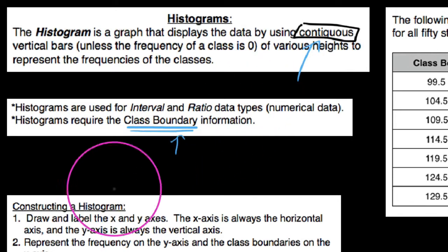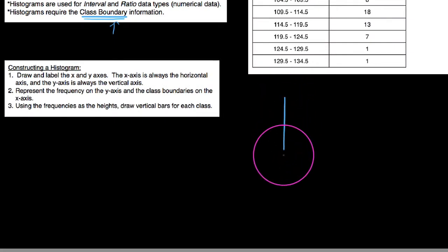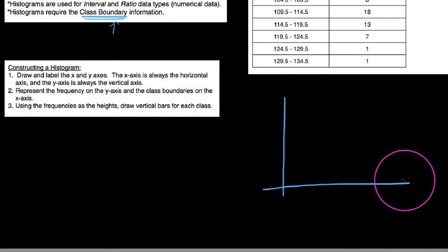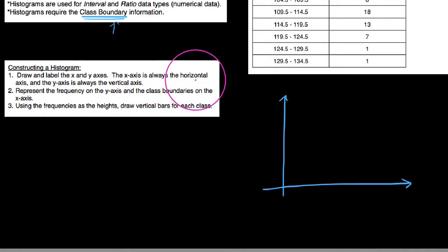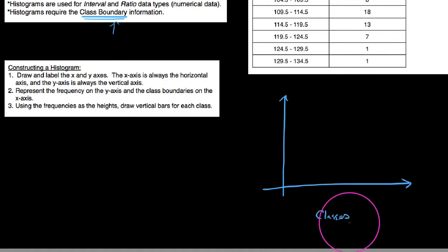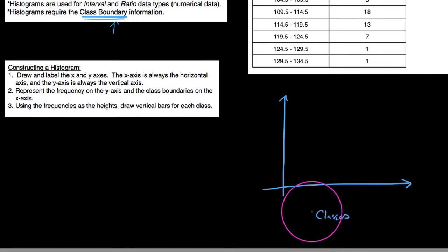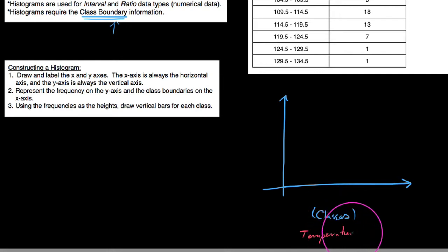As far as making one of these goes, we start by making the x and y axes to represent our classes and the frequencies in each class. The x-axis is always the horizontal axis — that's our classes. We have a table here: a frequency distribution for the record high temperatures of all 50 states. We should always label the axes, and I even grade on this. So we label the x-axis 'Temperatures' and the y-axis 'Frequency.'